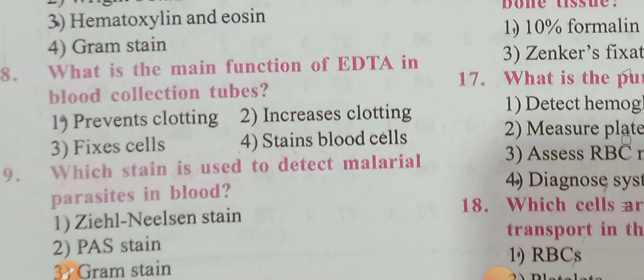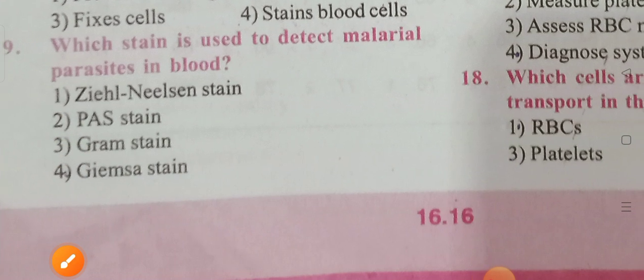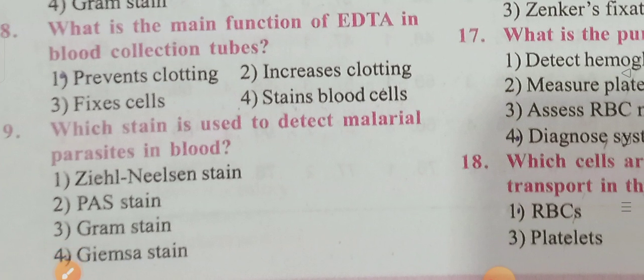What is the main function of EDTA in blood collection tubes? Options: prevents clotting, increases clotting, fixes cells, stains blood cells. Option 1 is the correct answer — EDTA prevents the clotting of blood. That is why we use EDTA in blood collection tubes.